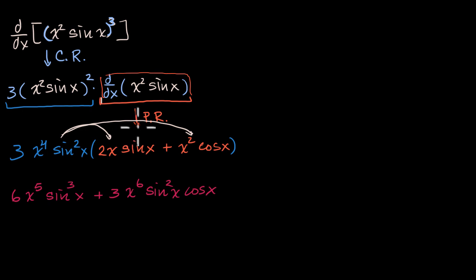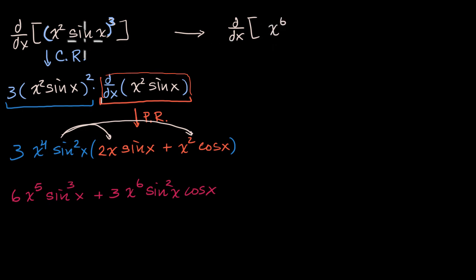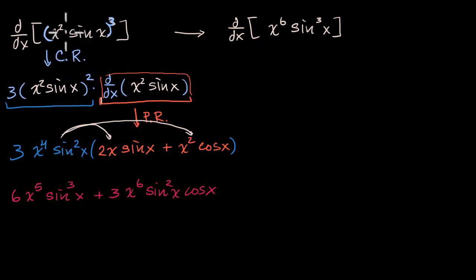What would be another strategy? Well, we could use our exponent properties first. The derivative with respect to x of x squared times sine of x to the third power — instead I could say x squared to the third power, which is x to the sixth, times sine of x to the third power. I'm using the same exponent property: if you're taking the product of things to some exponent, that's the same as each of them raised to the exponent and then their product.